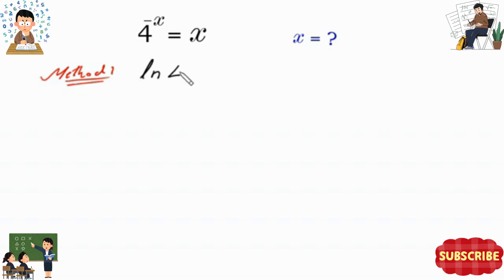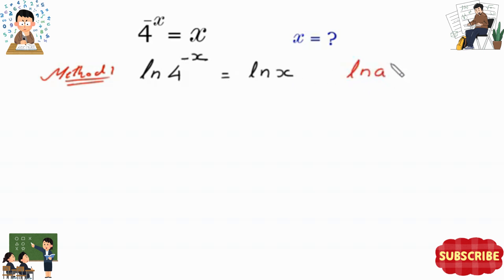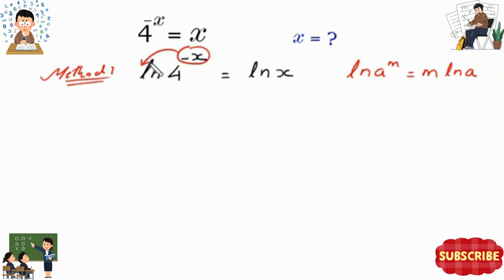We have ln of 4 to the power negative x is equal to ln of x. According to the natural log property, ln of a to the power m is equal to m times ln of a. So this power negative x will come out front: negative x times ln of 4 is equal to ln of x.